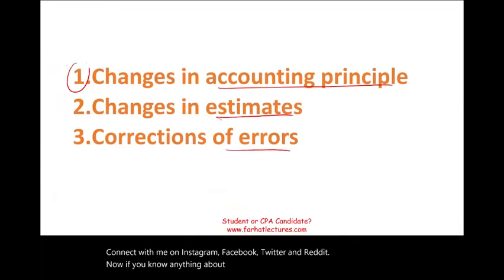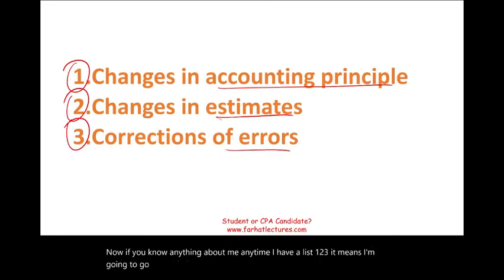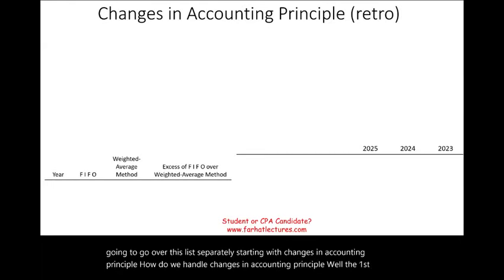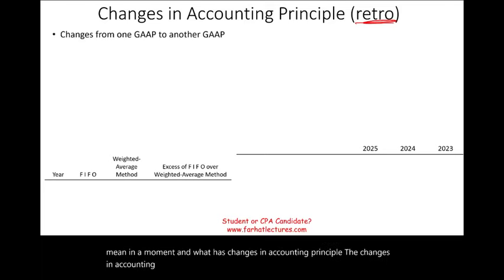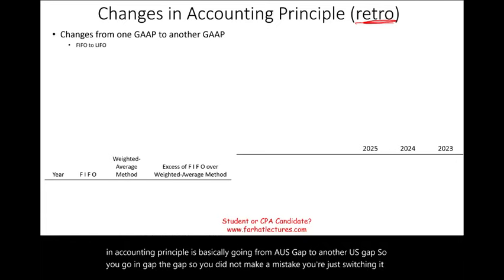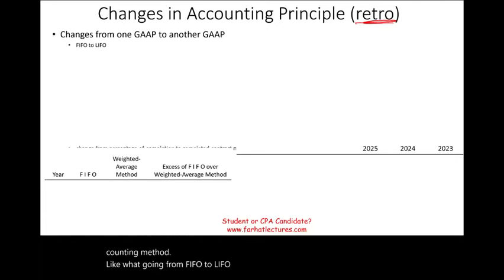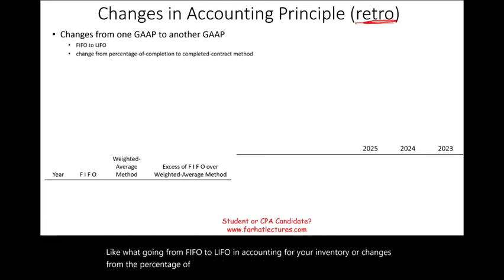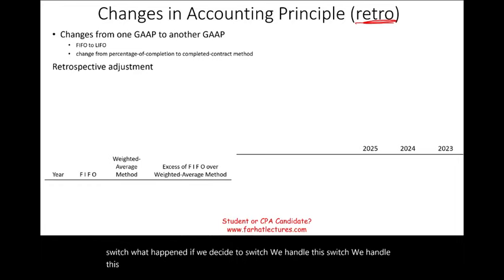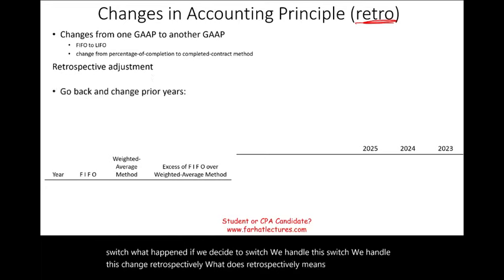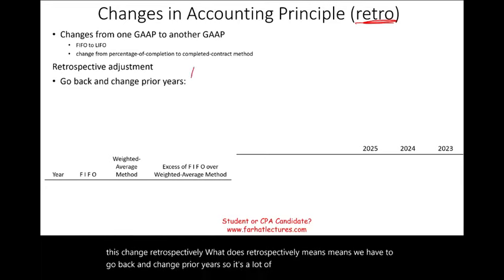I'm going to go over this list separately, starting with changes in accounting principle. A change in accounting principle is going from one U.S. GAAP method to another U.S. GAAP method — GAAP to GAAP. You did not make a mistake; you're just switching accounting methods. For example, going from FIFO to LIFO in accounting for inventory, or from the percentage of completion method to the completed contract method. This change is handled retrospectively, which means we have to go back and change prior years — that's a lot of work.